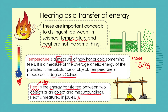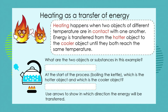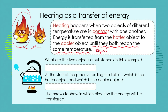Let's have a look at an example of heating as a transfer of energy. Heating happens when two objects of different temperatures are in contact with one another. Here we have a hotter object in contact with a cooler object, and the heat energy is going to move from the hotter object to the cooler object until they both reach the same temperature — the fancy word for that is equilibrium, until they are equal in temperature.